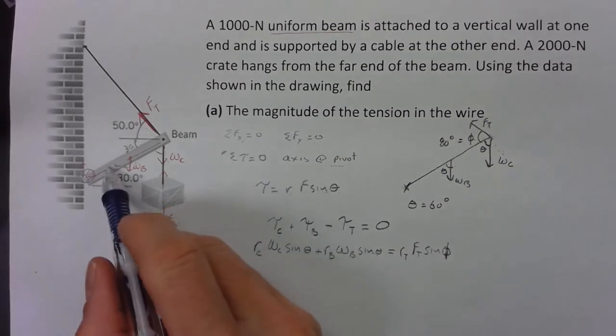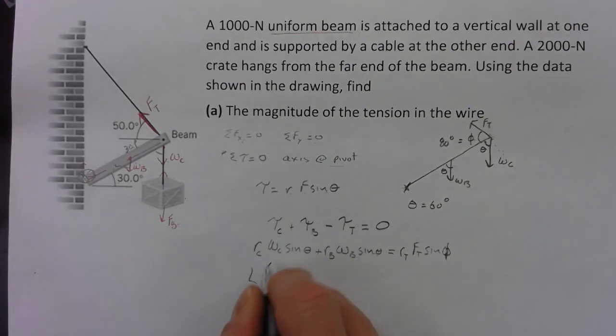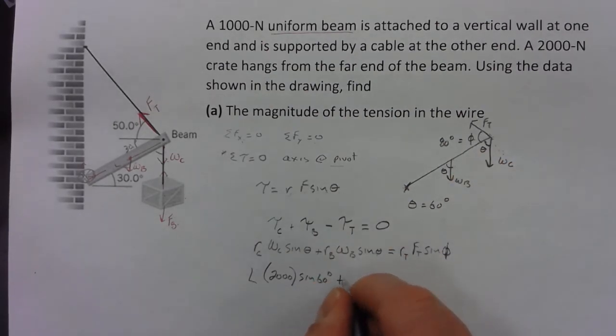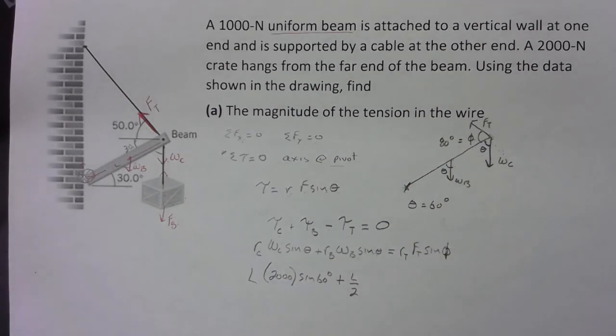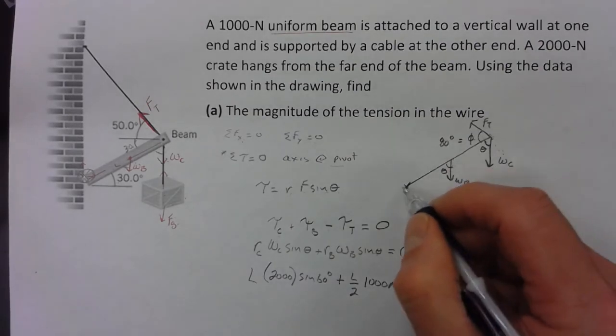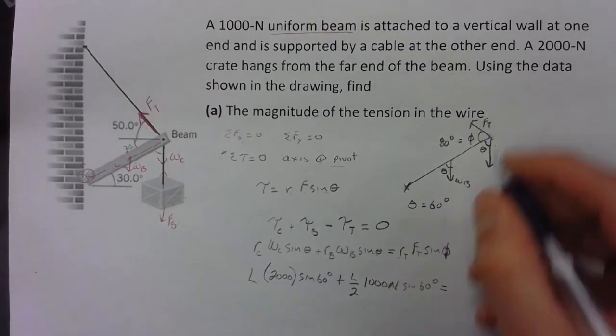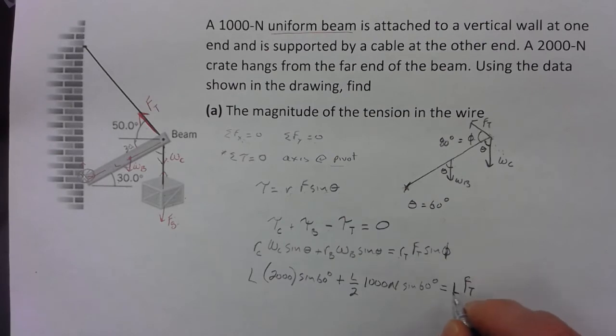All right, let's put in all our numbers. We don't know how long the beam is, we're just going to call that L. So the crate is all the way out at L. The crate has a weight of 2,000 newtons, and then we want that angle there, which is 60, sine of 60 degrees. Plus the beam's distance—well it's at half, it's at L over 2—and it is a thousand newtons, and the angle that that weight makes with that lever arm is 60. And that's going to equal the r for my tension, that's all the way out at L also. And that tension is what I want to find, and the tension makes an angle of 80 degrees with the beam.